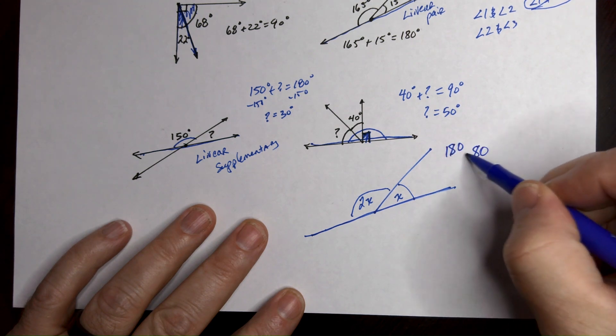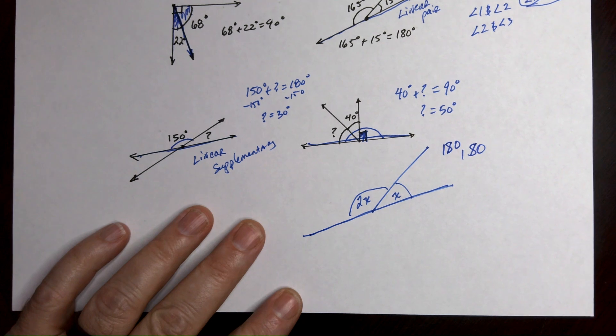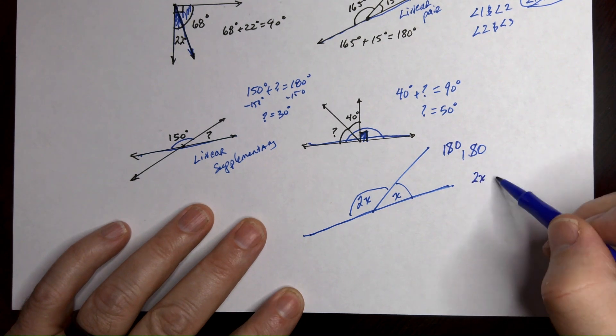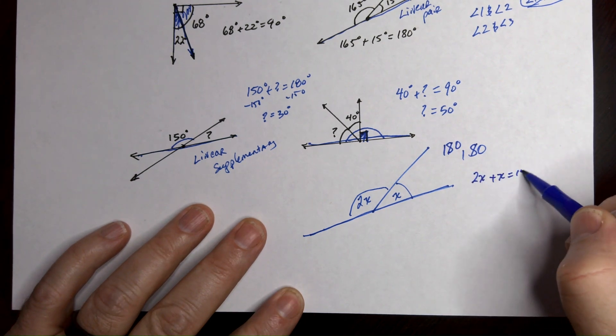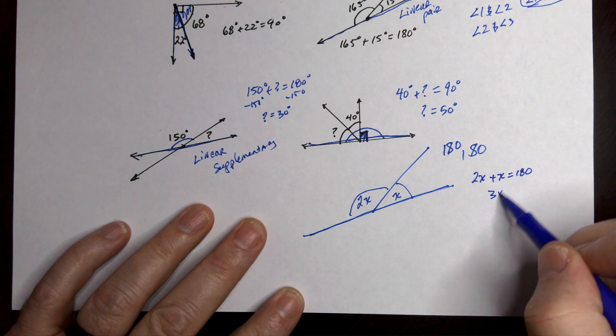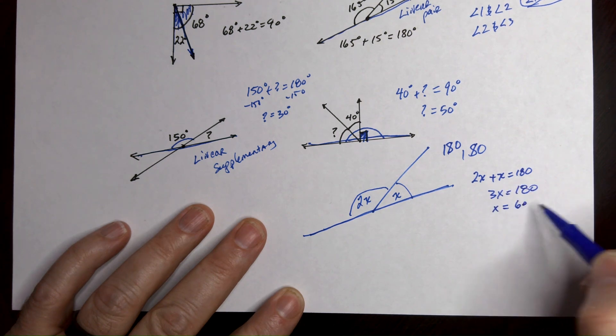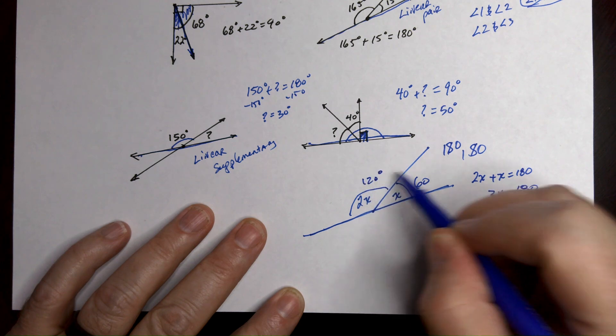See how I did the S? 180, right? So one angle plus the other angle equals 180. We can solve that. That's 3x equals 180. So if you divide by 3 you get 60. So this one's 60 and this one is 120.